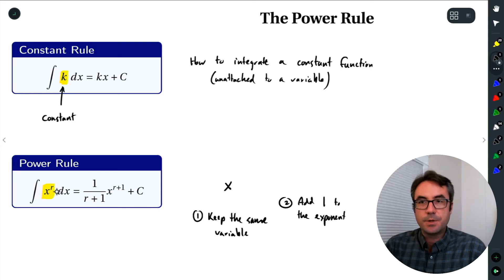The next step is to add 1 to the exponent. So our original exponent was r, so we're going to get r plus 1. And then once we have that new exponent,